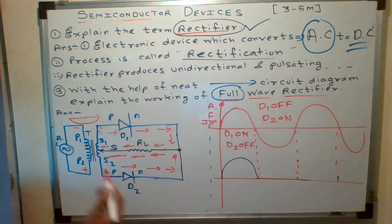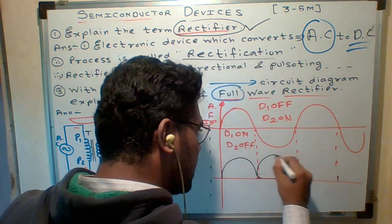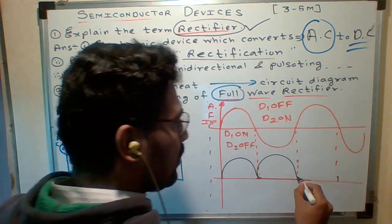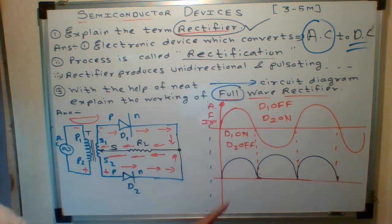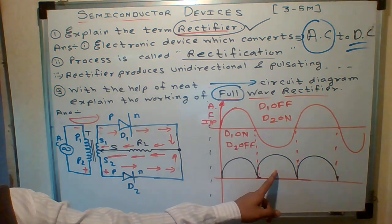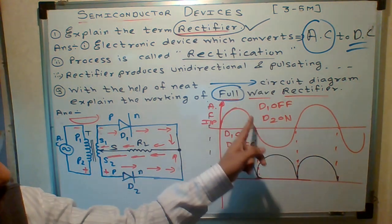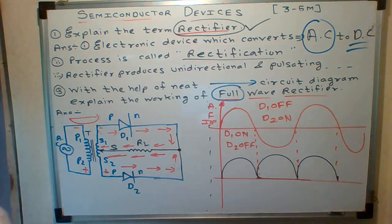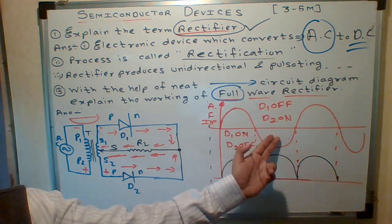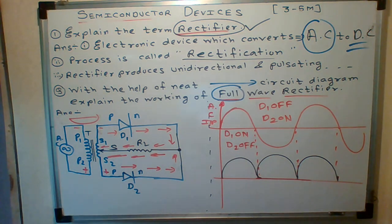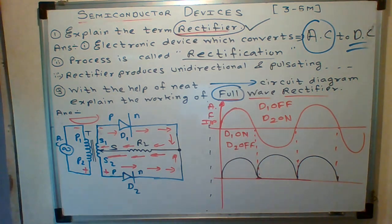The direction of current through the load is from right to left in both half-cycles — there is no reversal of current direction. This is called pulsating DC. During the positive half-cycle you get output voltage, and during the negative half-cycle you also get output voltage. That is why it is called a full-wave rectifier — you get output during the full wave.